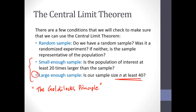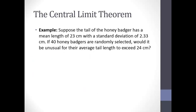These are the main ideas from Chapter 11. We did a few examples and I wanted to finish with one more. For this example, we'll suppose that the tail of the honey badger has a mean length of 23 centimeters and a standard deviation of 2.33 centimeters. If 40 honey badgers are randomly selected, would it be unusual for their average tail length to exceed 24 centimeters?